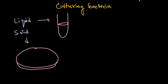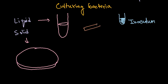For culturing bacteria, we have the media and we need the inoculum — the bacteria inoculum. We take this inoculum and put it into the media, either liquid or solid. We use an inoculating loop: at the terminal loop end, we dip it into the inoculum, then re-dip it into the liquid media and stir it very well.